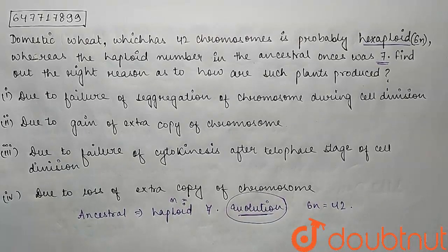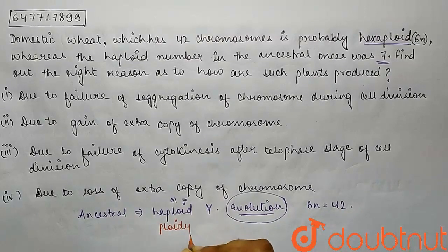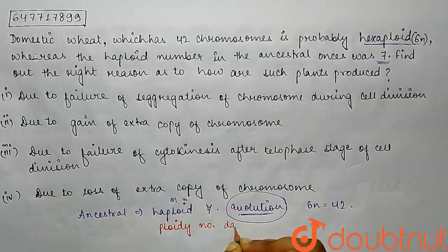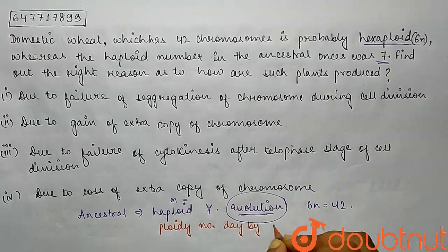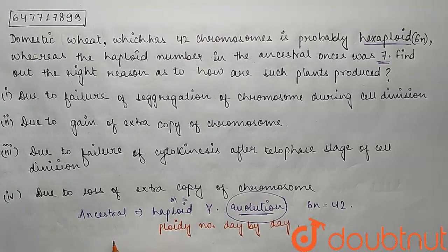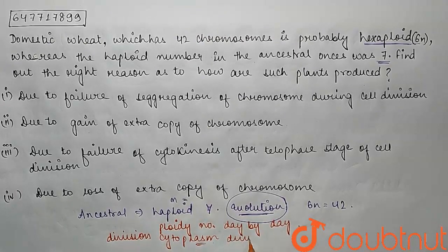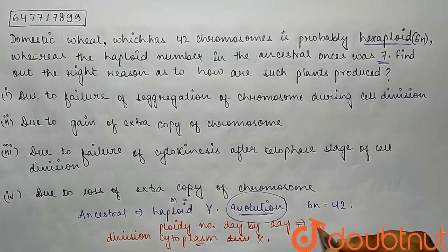So basically, what happens is that the whole reason the ploidy number changes is that this ploidy number is generated day by day. The main reason for this evolution is that when there are cell divisions, the cytoplasm division doesn't take place. What happens is that the ploidy number is increased cell by cell.